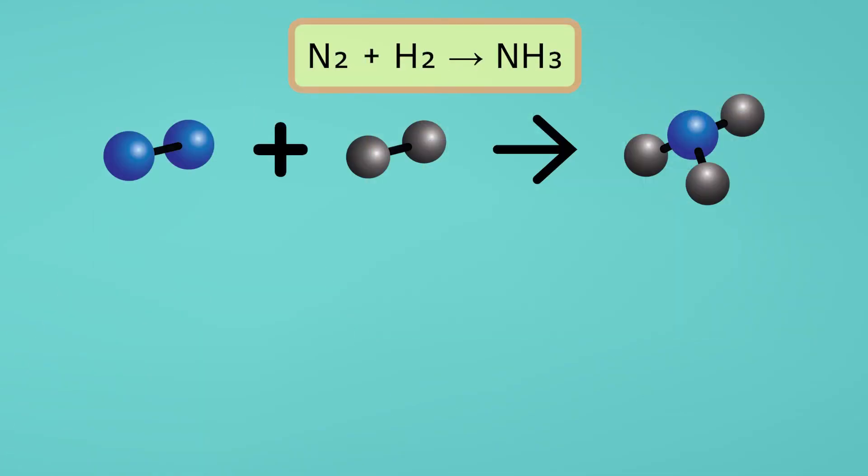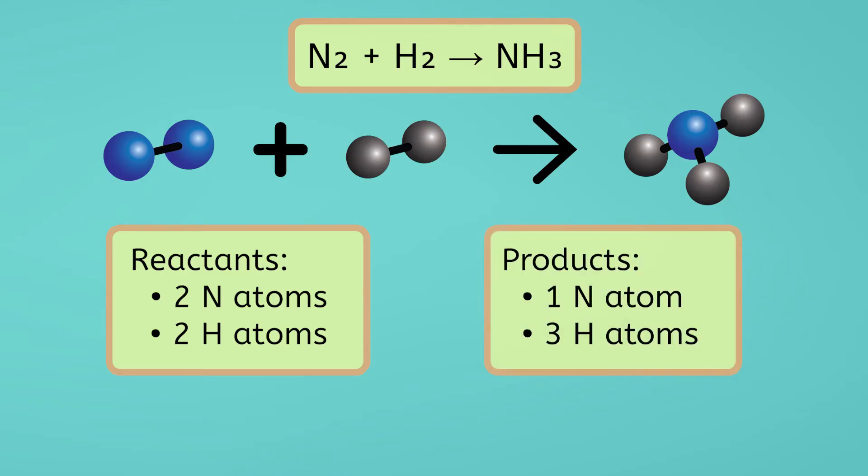Let's work through these steps to balance the equation N2 plus H2 yields NH3. Let's make a list of the number of atoms of each element in the reactants and products. In our reactants, we have two nitrogen atoms and two hydrogen atoms. In our products, we have one nitrogen atom and three hydrogen atoms.